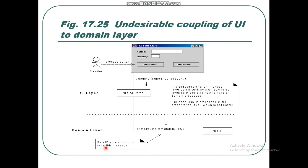Undesirable coupling of UI to domain: an action is performed — press a button — but a JFrame for a sale should not directly send the make sale message. There should be a controller class which receives this message and then sends it. It is undesirable for interface layer objects such as windows to directly handle domain processes. Business logic embedded in the presentation layer is not useful.